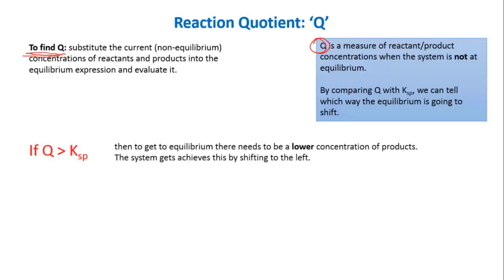So if Q is greater than Ksp, and this is the situation we just had, let me rewrite. We had Ksp, which is concentration of silver times concentration of chloride, and the value of that was 1.7 times 10 to the minus 10.